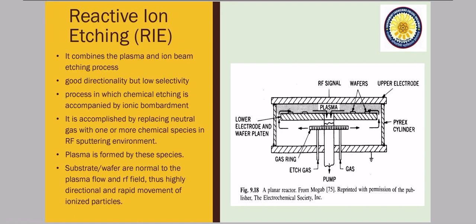Reactive ion etching is a process in which chemical etching is accompanied by ionic bombardment and RF sputtering. It uses plasma, ion beam etching, and RF sputtering — it is actually a mixture of all these processes.